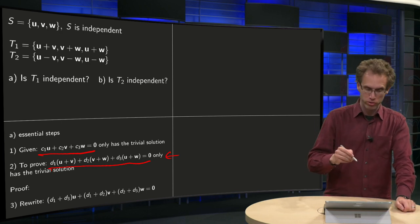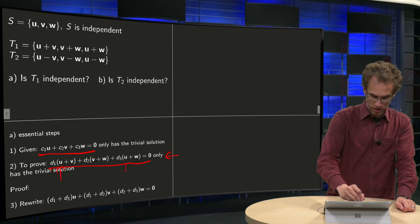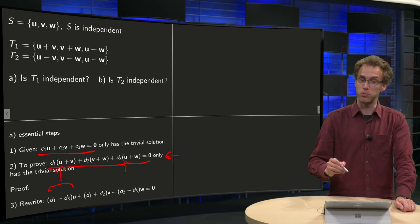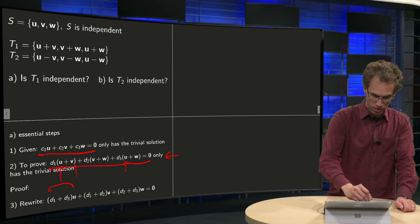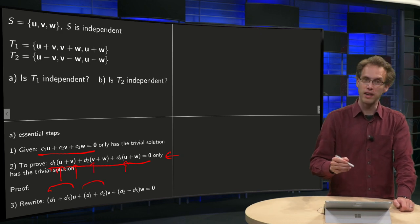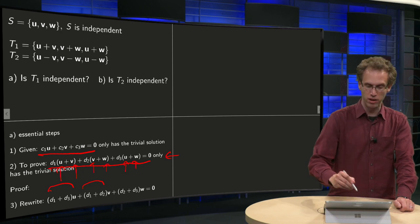First we collect all terms in front of u, so we have a d1 times u over here and a d3 times u over here, so that gives us d1 plus d3 times u. Then we collect the terms with a v, a d1 over here and a d2 over here, so it gives a d1 plus d2 times v and then the same for the w, a d2 over here and a d3 over here, so that gives us a d2 plus d3 times w.